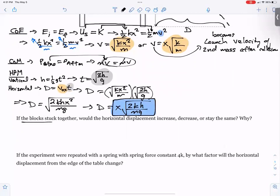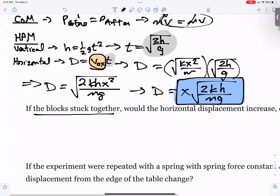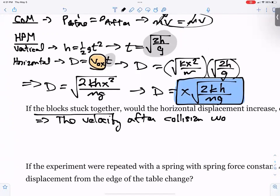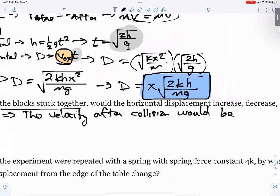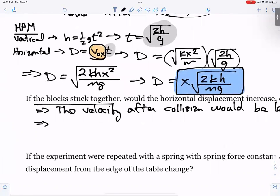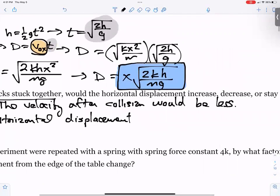If the blocks stuck together, would the horizontal displacement increase, decrease, or stay the same? So horizontal displacement is based upon velocity and time. If the blocks stick together, the velocity after collision would be less. So the horizontal displacement will decrease, therefore the horizontal displacement will decrease.